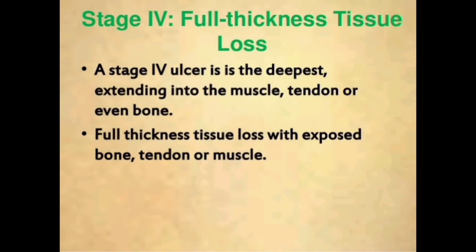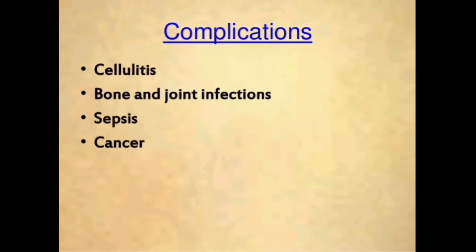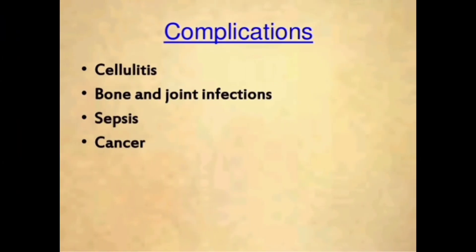The subcutaneous layer has a relatively poor blood supply, so it is difficult to heal. Stage four is the deepest stage — full thickness tissue loss extending into the muscle, tendon, or even bone, with exposed bone, tendon, or muscle.